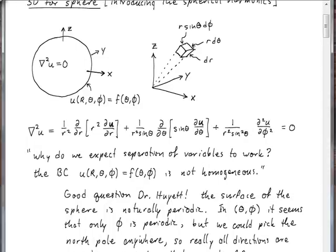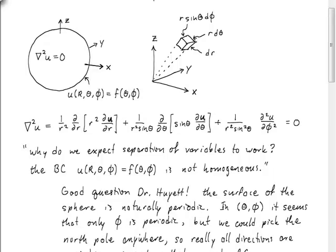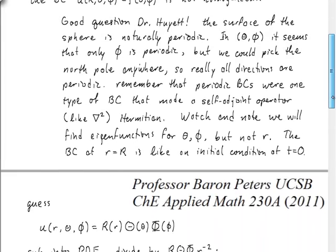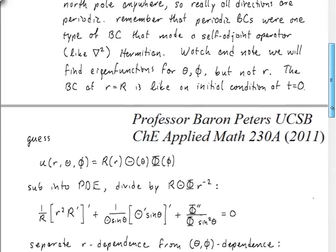So it's because of that that we get these eigenfunctions, the spherical harmonics, at the end of the day, out of this solution that I'm going to show today. So note that we'll find eigenfunctions for the theta and phi dependence, but not for the r dependence in this problem. r will be much like the t equals 0 initial condition that we used in solving the heat equation in earlier parts of the class.